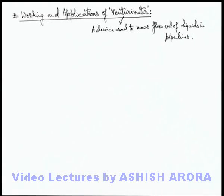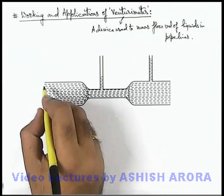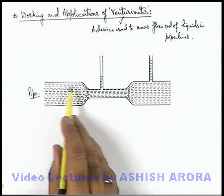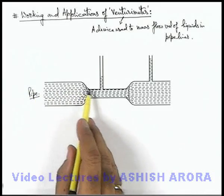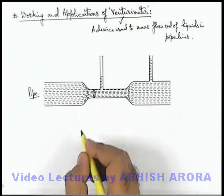Here you can see this is the picture of a typical venturi meter. In this system of venturi meter, this is a pipe. At one end of the pipe is connected to a constriction where its cross sectional area is reduced.